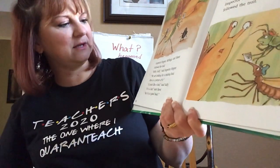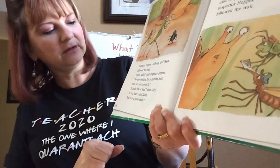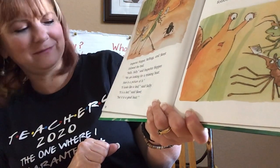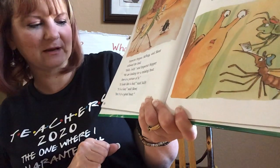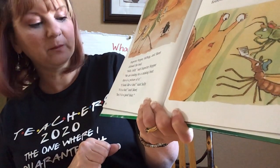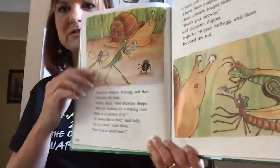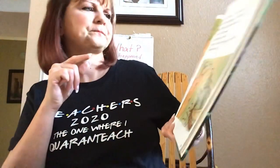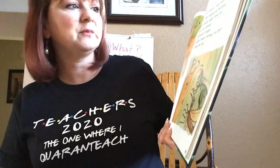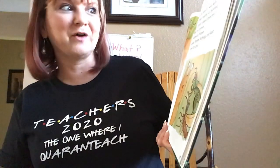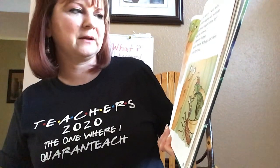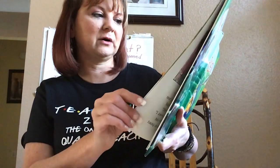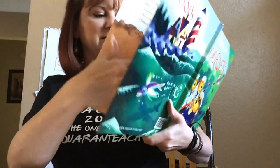Inspector Hopper, McBug, and Skeet all followed the trail. 'Hello, Sally,' said Inspector Hopper. 'We are looking for a missing boat. Here's a picture of it.' 'It looks like a leaf,' said Sally. 'It is a leaf,' said Skeet, 'but it is a good boat.' McSally — she's a snail — she said it looks like a leaf too, because it is. 'I have not seen it,' said Sally. 'I've been jogging all morning. I've already jogged three feet.' 'Thank you anyway,' said Inspector Hopper. So Sally didn't see it.